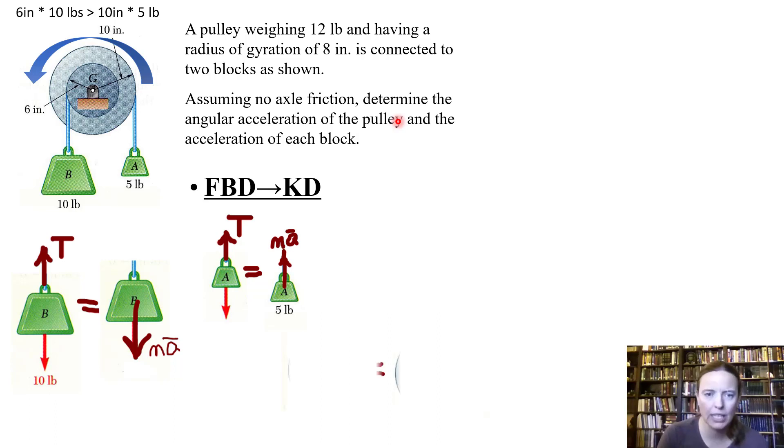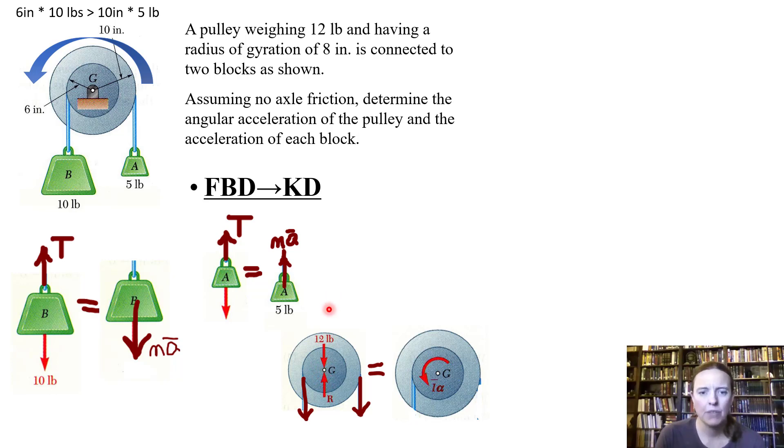Now let's look at the pulley. If we draw all of the forces acting on the pulley in the center, we have the weight of the pulley pulling down and some kind of pin holding it in place going up. Now for the pulley, it is not moving up and down, it's stationary. All it's doing is just spinning in place. So when we draw the kinetic diagram for the pulley, all we have is the moment of inertia times our angular acceleration. For the blocks we have ma going on, for the pulley it's just rotating in place. So everything is going to add together to I alpha for this case.